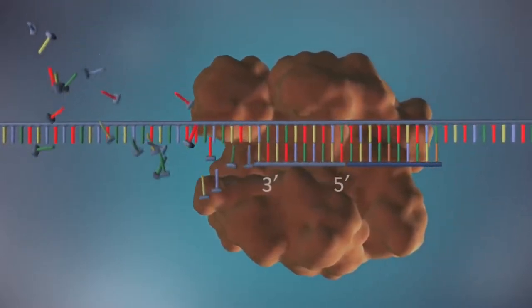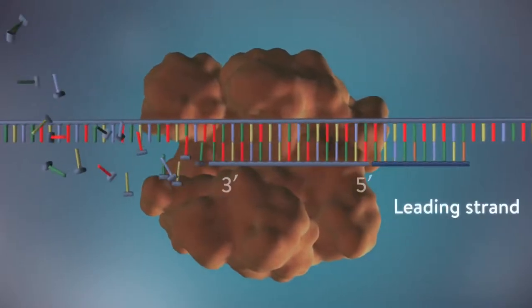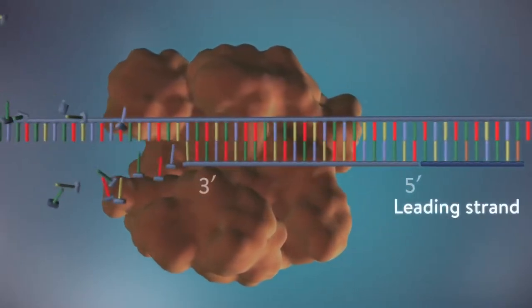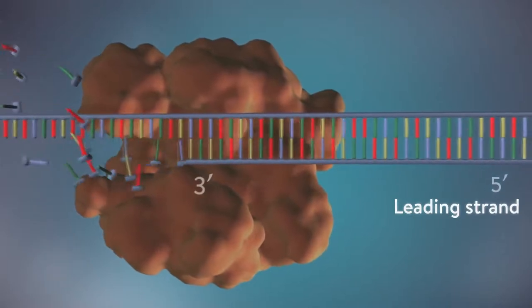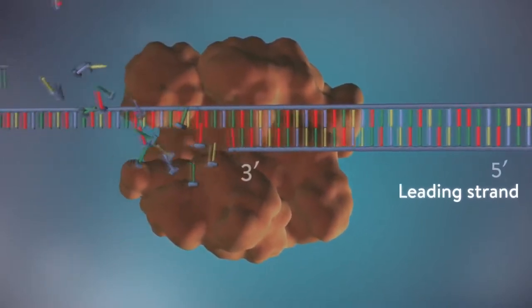One of the new strands of DNA, the leading strand, is made continuously, the DNA polymerase adding bases one by one in the five prime to three prime direction.